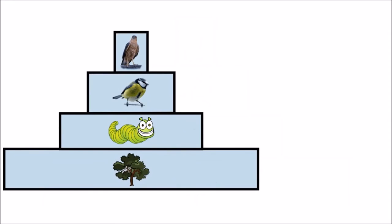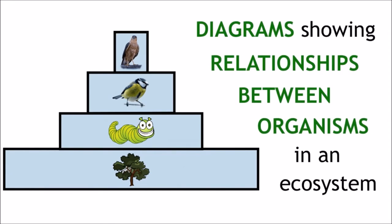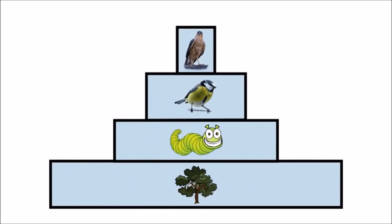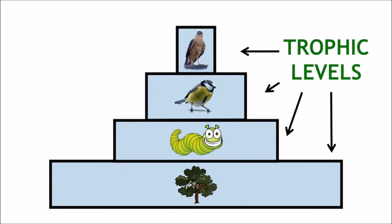So, to recap. Ecological pyramids are diagrams that we use to visually represent the relationship between organisms in an ecosystem. The bars each represent trophic levels, and their order represents the flow of energy.